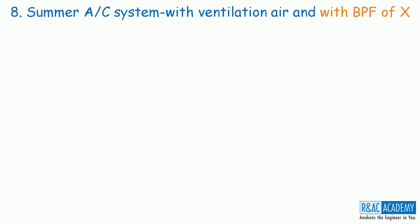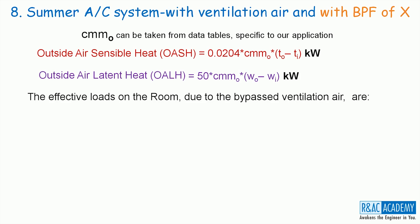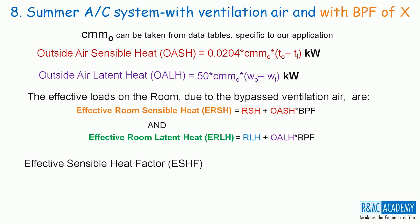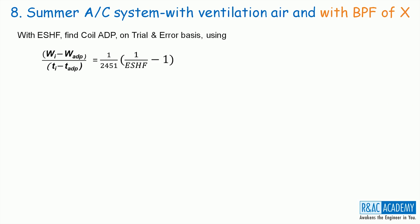Let us now get into the calculations. We have the CMMO taken from the data table specific to our application. Using CMMO, OASH and OALH can be computed. Now let us compute the effective loads on the room due to the bypassed ventilation air. The first one is the effective room sensible heat ERSH, which is equal to RSH plus OASH multiplied by bypass factor. The second one is the effective room latent heat ERLH, which is equal to RLH plus OALH multiplied by bypass factor. Using ERSH and ERLH, we can compute the effective sensible heat factor ESHF, which is the ratio of ERSH divided by ERTH. Using ESHF, we can find the coil ADP on a trial and error basis.